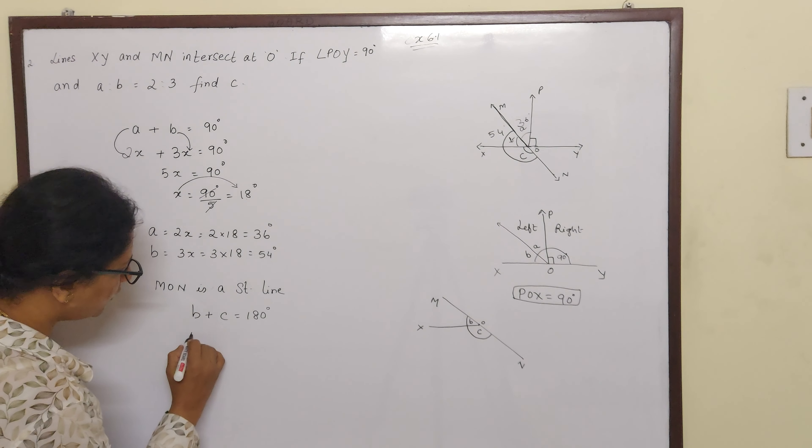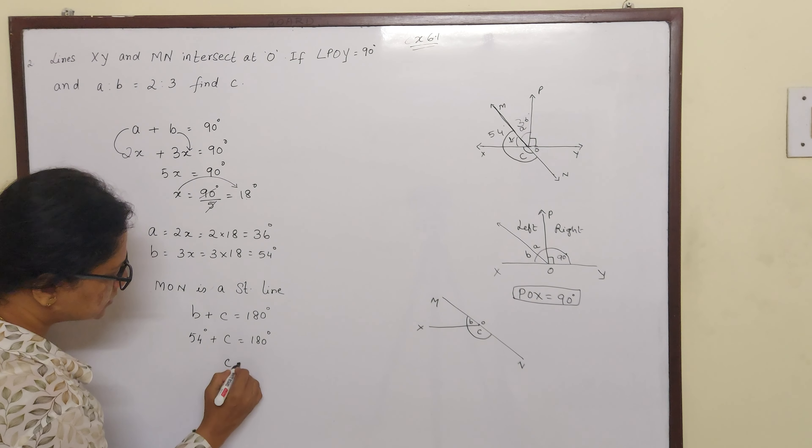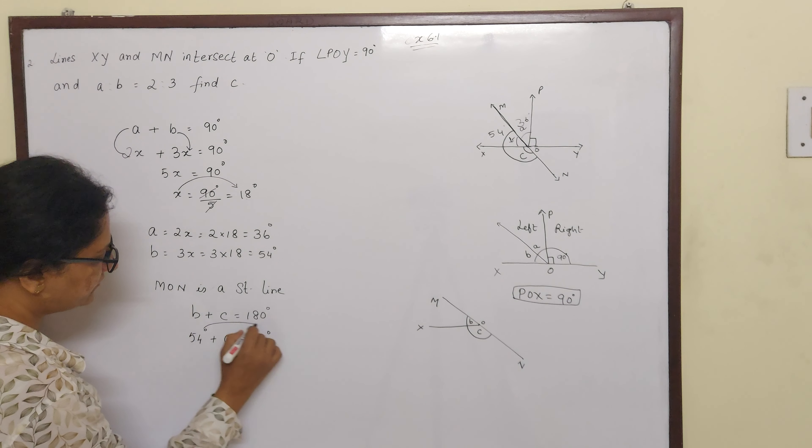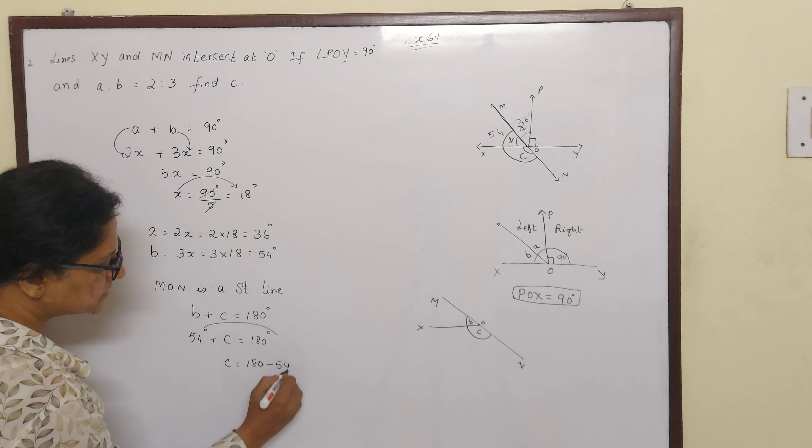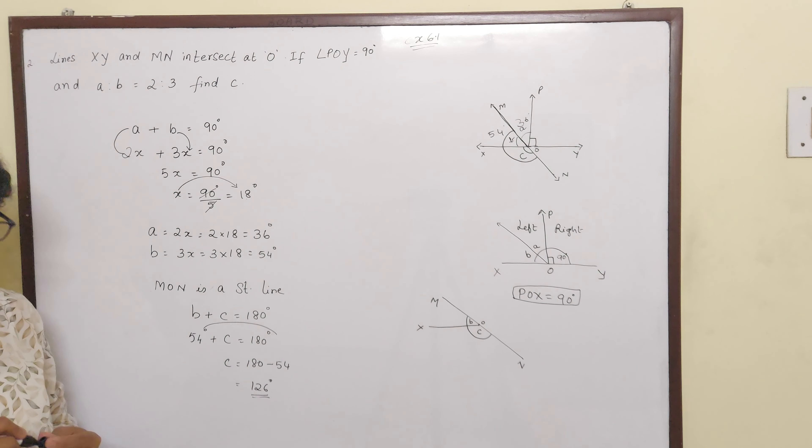Now B we already found out, it is 54 degrees. C is equal to, we have to find out. So C is equal to, when 54 goes here, it becomes minus 54. And your value of C is 126 degrees.